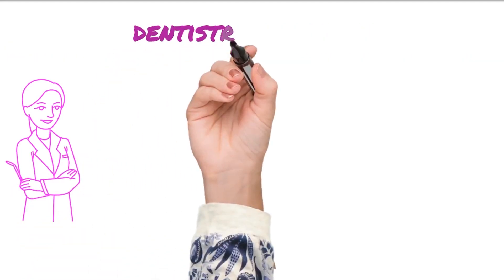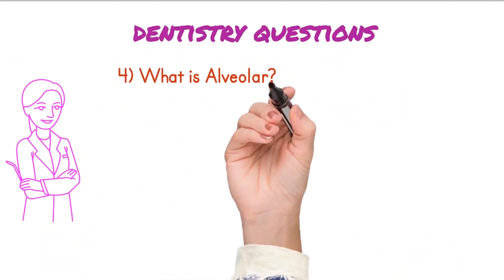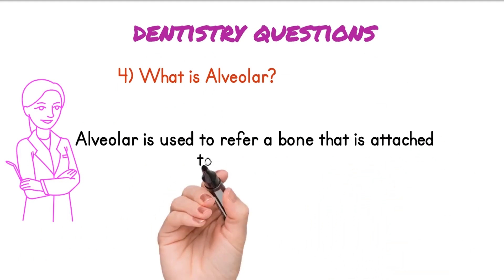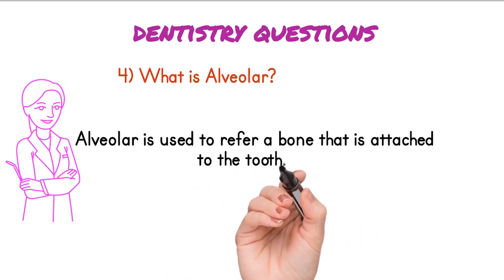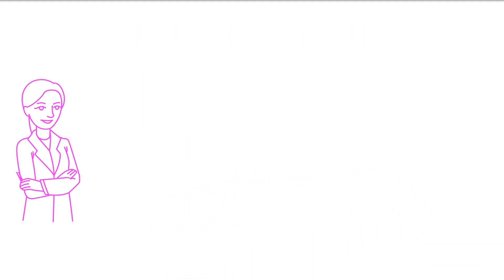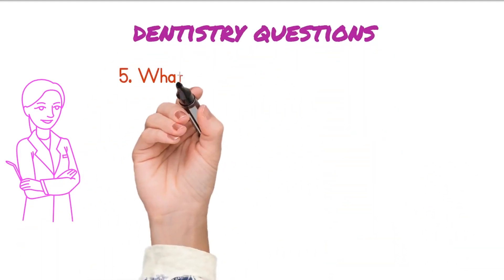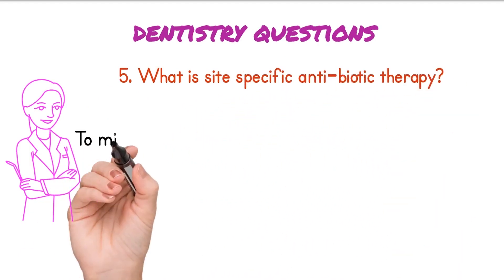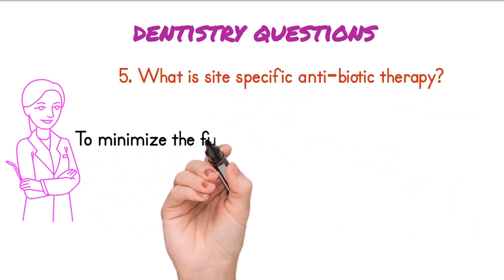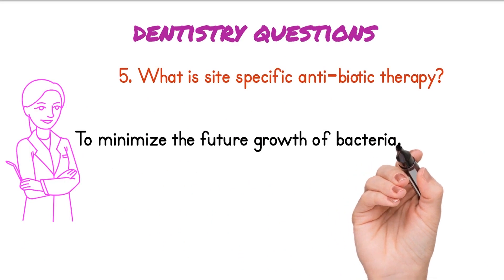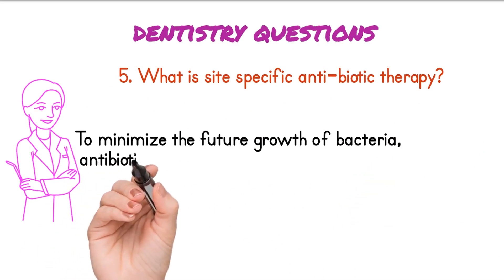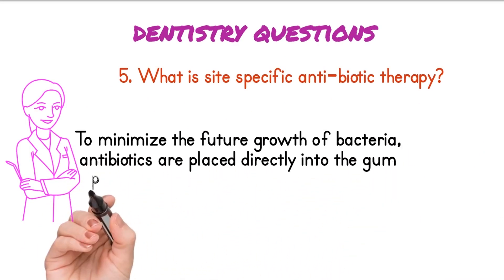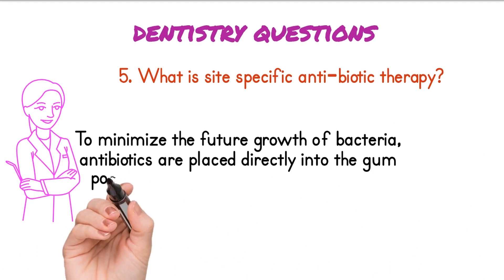What is alveolar? Alveolar is used to refer to a bone that is attached to the tooth. What is site-specific antibiotic therapy? Site-specific antibiotic therapy is used to minimize the future growth of bacteria. Antibiotics are placed directly into the gum pockets.